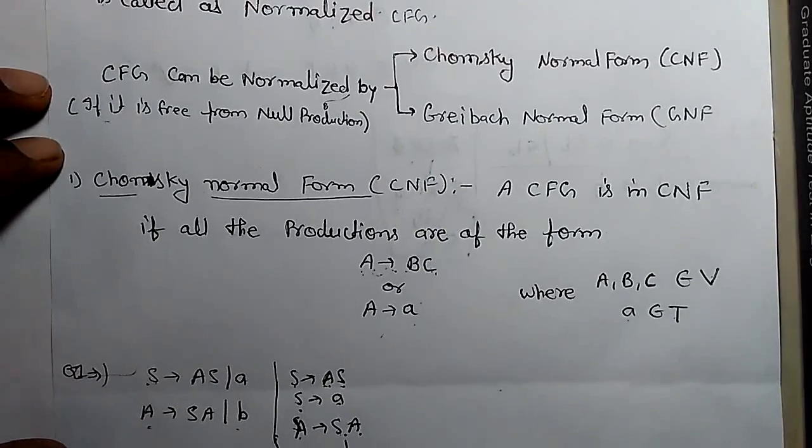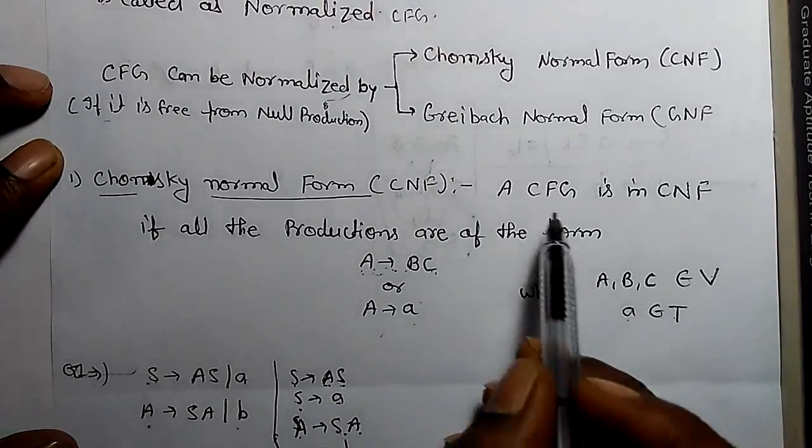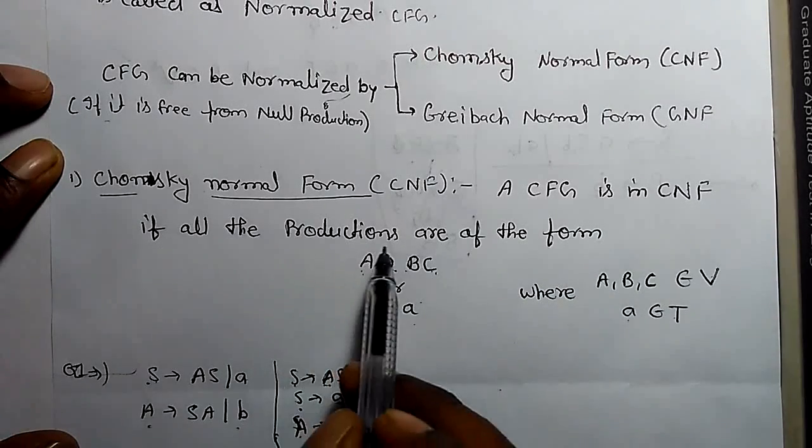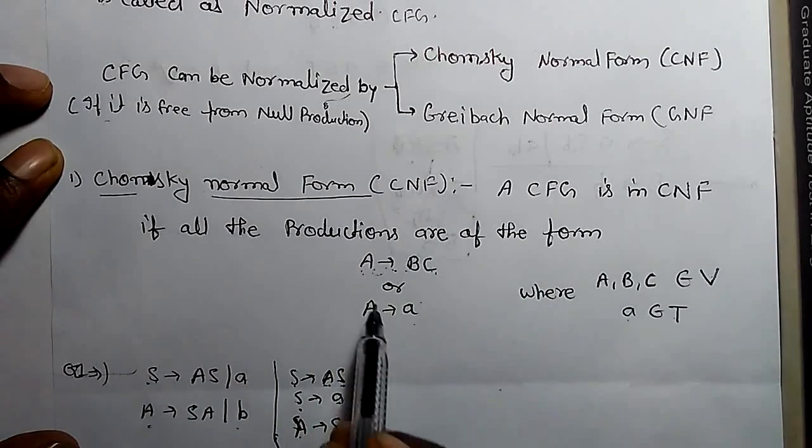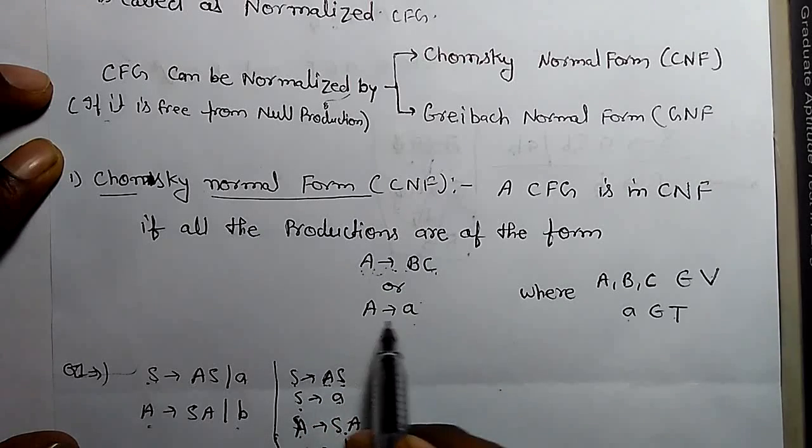The first definition of CNF is: a CFG is in CNF if all the productions are of the form A derives BC, and A derives a.